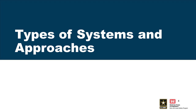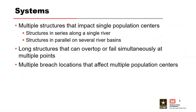What are some types of systems and approaches for system risk? Generally, there are three types: multiple structures that impact single population centers, which could be structures in series along a single river or in parallel along several river basins; long structures that overtop or fail simultaneously at multiple points, like a long levee system; or multiple breach locations that affect multiple population centers.